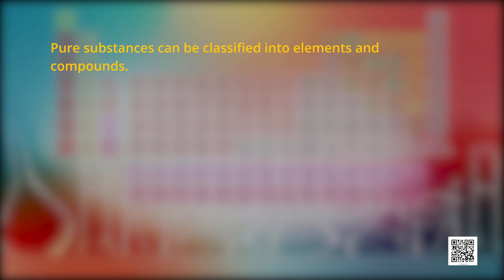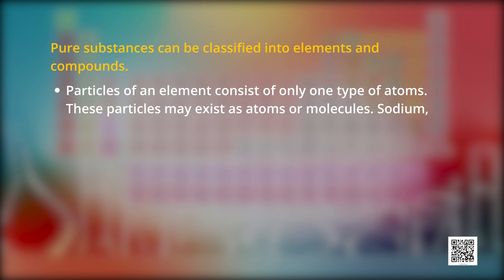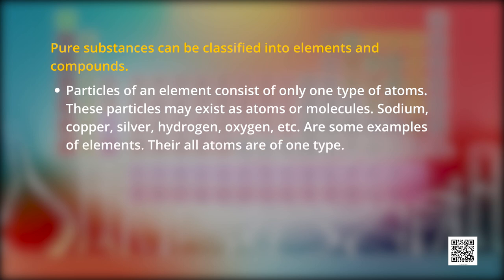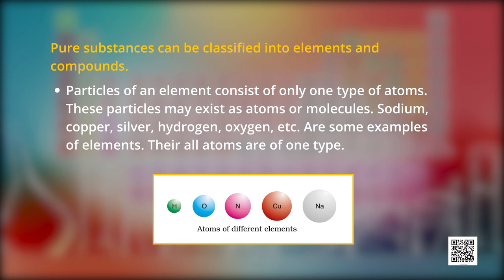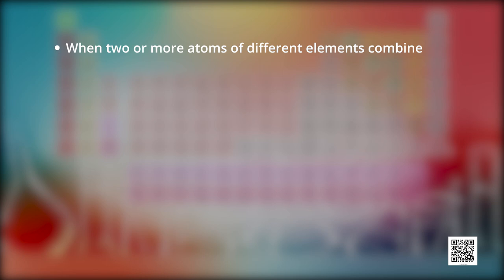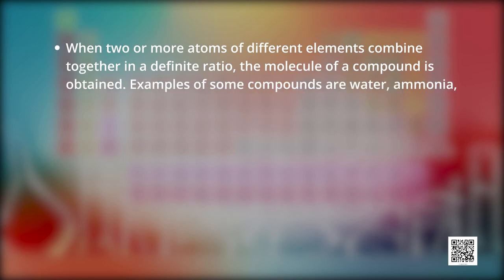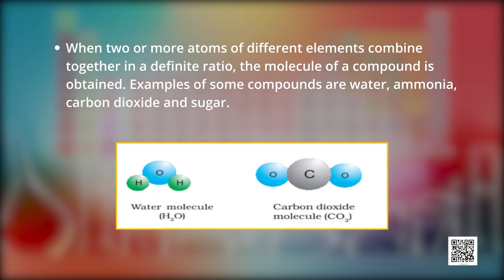Pure substances can further be classified into elements and compounds. Particles of an element consist of only one type of atoms. These particles may exist as atoms or molecules. Friends, sodium, copper, silver, hydrogen, all these are examples of elements. There all atoms are of only one type. You may be familiar with atoms and molecules from the previous classes. When two or more atoms of different elements combined together in a definite ratio, the molecule of a compound is obtained. Some compounds such as water, ammonia, carbon dioxide, sugar, glucose, and many more you all know. Just make a table and try to identify the difference between elements and compounds.